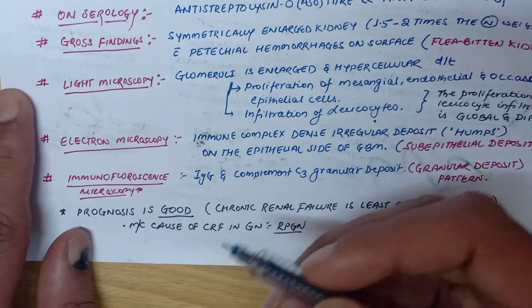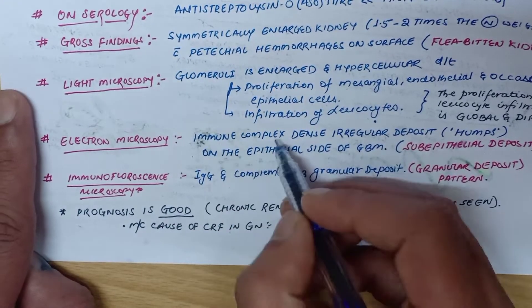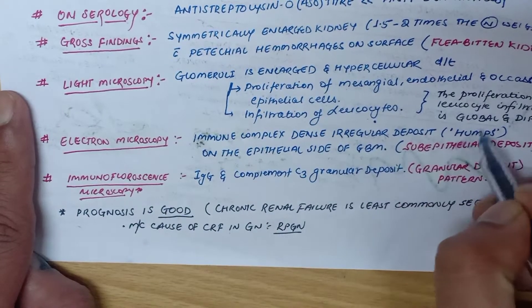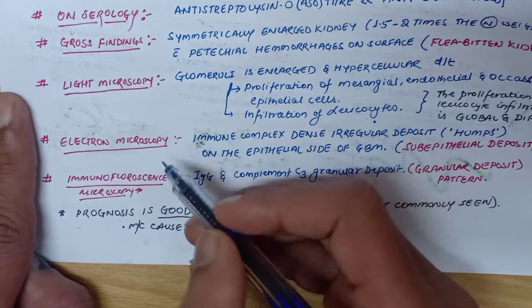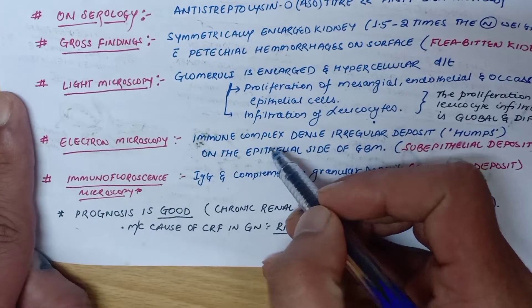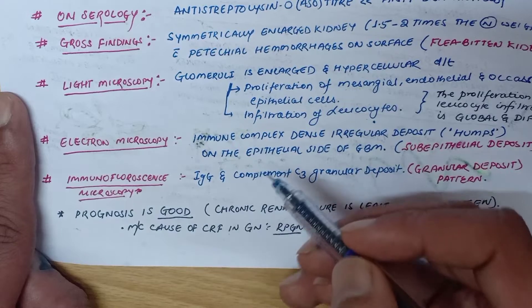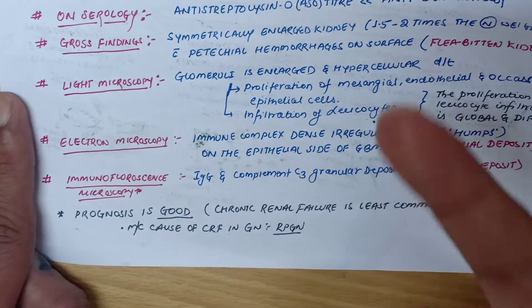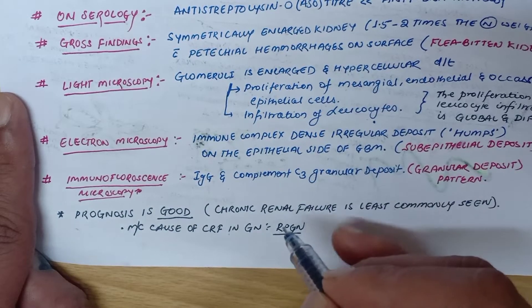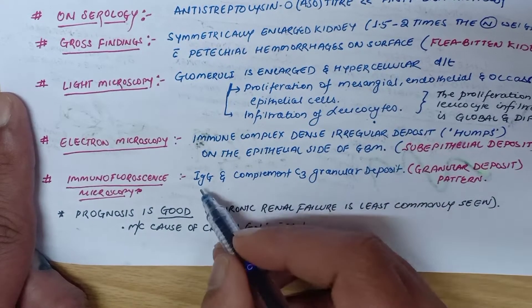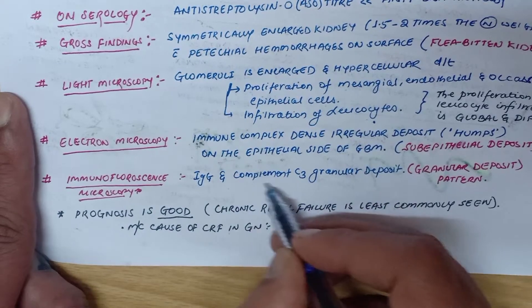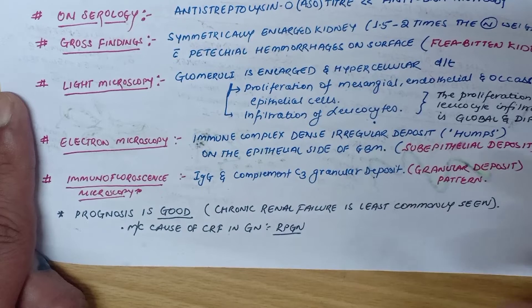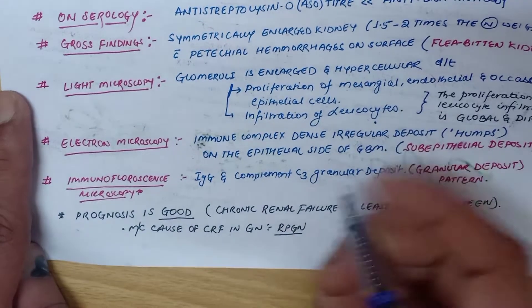In electron microscopy, immune complex dense irregular deposits — that is the hump — are seen on the epithelial side of the glomerular basement membrane. So in electron microscopy you will see sub-epithelial deposits. In immunofluorescence, used to look for the composition of the deposit, in PSGN or APGN you will see IgG and complement C3 granular deposits, which will show a granular pattern of deposit.